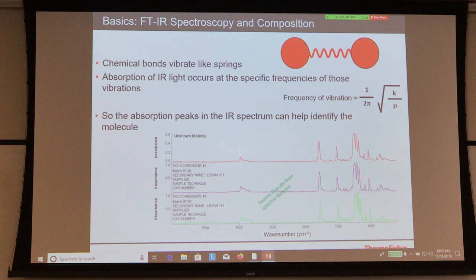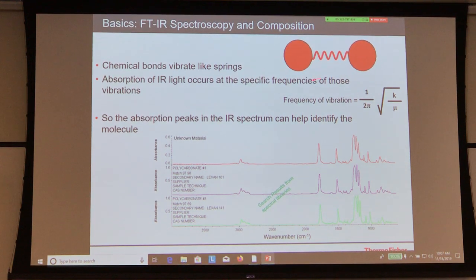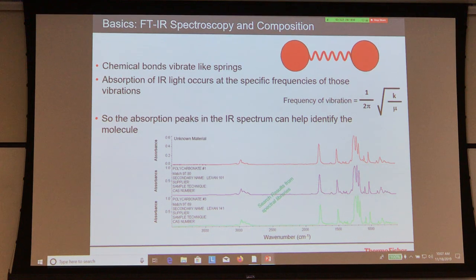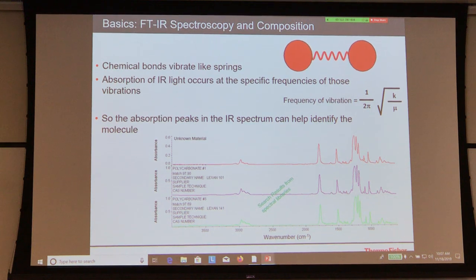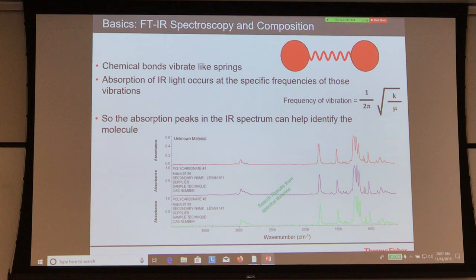The frequency of vibration is inversely proportional to the mass of the atoms — the lower the mass, the higher the wavenumber you're going to see; the heavier the atoms, the lower the wavenumber. Once we run a sample, we get a spectrum. Here we have a simple spectrum of polycarbonate. How do we know it's polycarbonate? We run it against a standard library. That's where libraries become very important, and we'll address this in detail this afternoon.